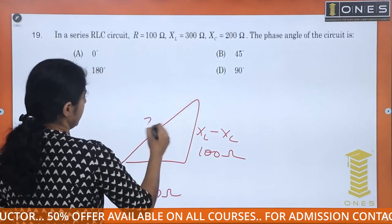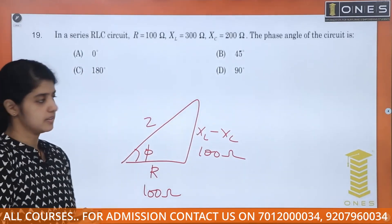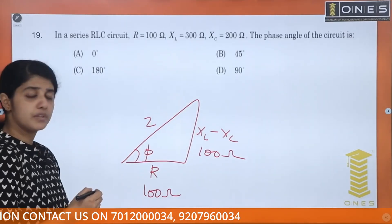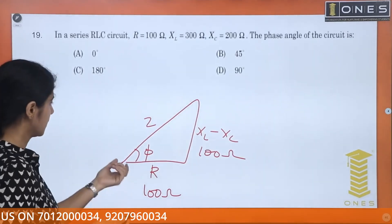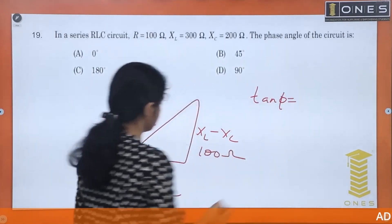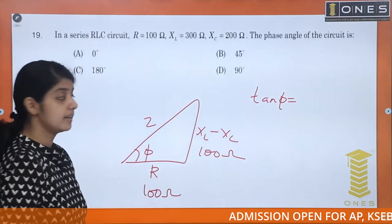Here is Z. That is the power factor triangle. What is phi? There is a relation: sin phi, cos phi. Look here, tan phi. Tan phi is equal to XL minus XC divided by R.